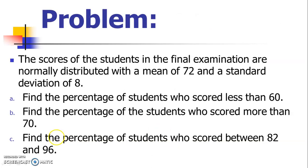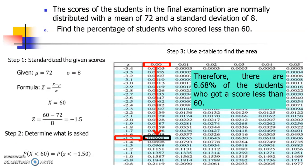Let's proceed now with the problem. The scores of the students in the final examinations are normally distributed with a mean of 72 and a standard deviation of 8. Letter A: find the percentage of students who scored less than 60. Let's start with this first question.